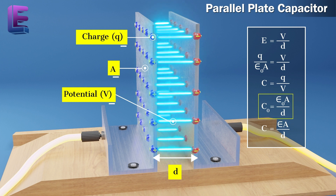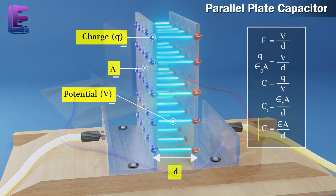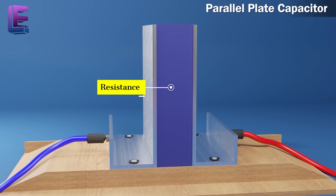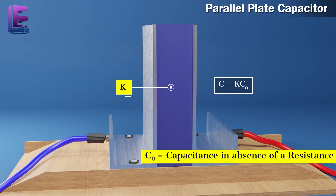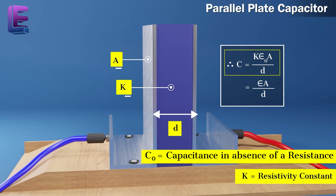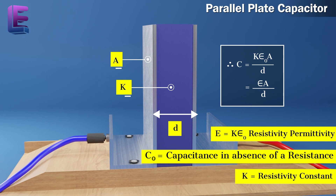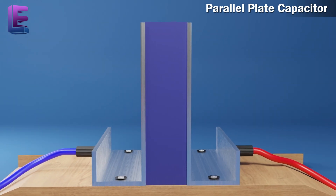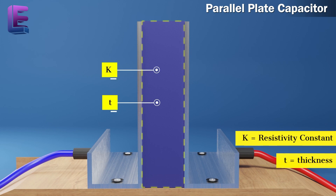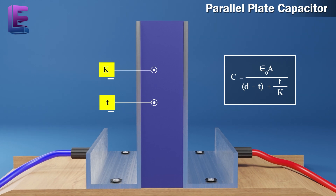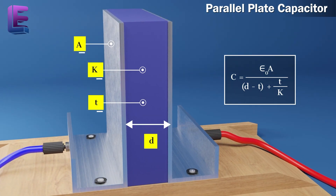When there is a dielectric between the plates, C is equal to epsilon A by D. By filling the space between the plates with a dielectric, capacitance increases by K times. Hence, C is equal to K C naught, where C naught is the capacitance in the absence of a dielectric and K is the dielectric constant. Hence, C is equal to K epsilon naught A by D, which equals epsilon A by D. Here, epsilon is equal to K epsilon naught. If a dielectric of thickness T and dielectric constant K is placed between the capacitor plates, then C is equal to epsilon naught A divided by (D minus T plus T by K).